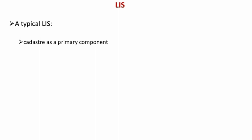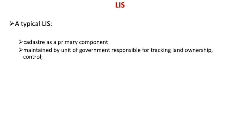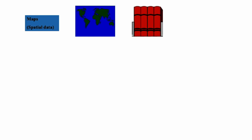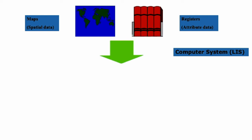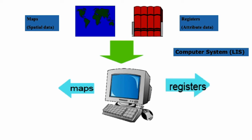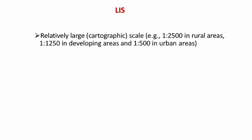In a typical LIS, the cadastre is a primary component maintained by the unit government responsible for tracking it. In Nepal, this is the Survey Department. It uses parcel-based GIS, hard-copy maps, and CAD or GIS software for spatial representation. Spatial data is represented on a map, while non-spatial data such as registers and attributes are managed in a computer-based system — a combined, integrated map-and-register approach.